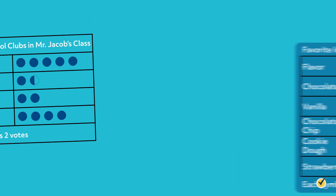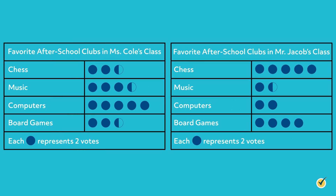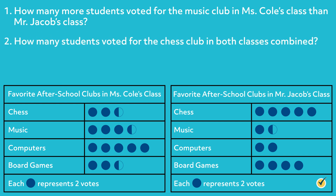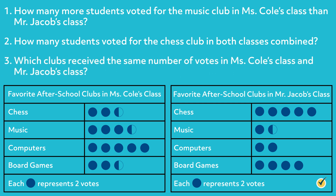I have one more pictograph for you to analyze on your own. Ms. Cole and Mr. Jacobs surveyed their classes to find their favorite afterschool club. The results are shown in the two pictographs below. Use the information given to answer the following questions. Number 1: How many more students voted for the music club in Ms. Cole's class than Mr. Jacobs' class? Number 2: How many students voted for the chess club in both classes combined? Number 3: Which clubs received the same number of votes in Ms. Cole's class and Mr. Jacobs' class? Pause the video, analyze the pictograph, and see if you can answer these questions yourself. When you're ready, resume the video and we'll go over the answers together.